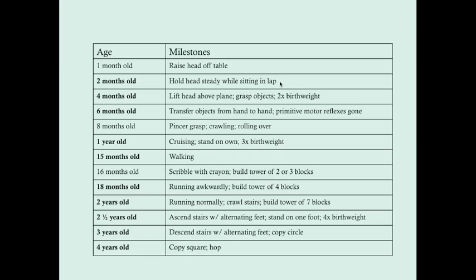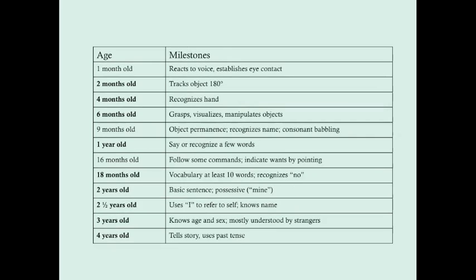Another important thing to know — both for the test and clinical practice — is weight. At four months of age, a baby should double their birth weight. At one year of age, a baby should triple their birth weight. At two and a half years of age, a baby should quadruple their birth weight. This is important for assessing failure to thrive.